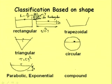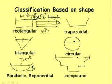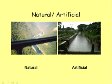A compound channel is a combination of different channel types — for example, a main channel with floodplains on the sides forming a composite cross section. Water may flow across this combined section. Based on whether it is naturally occurring or constructed, we classify channels as natural or artificial.